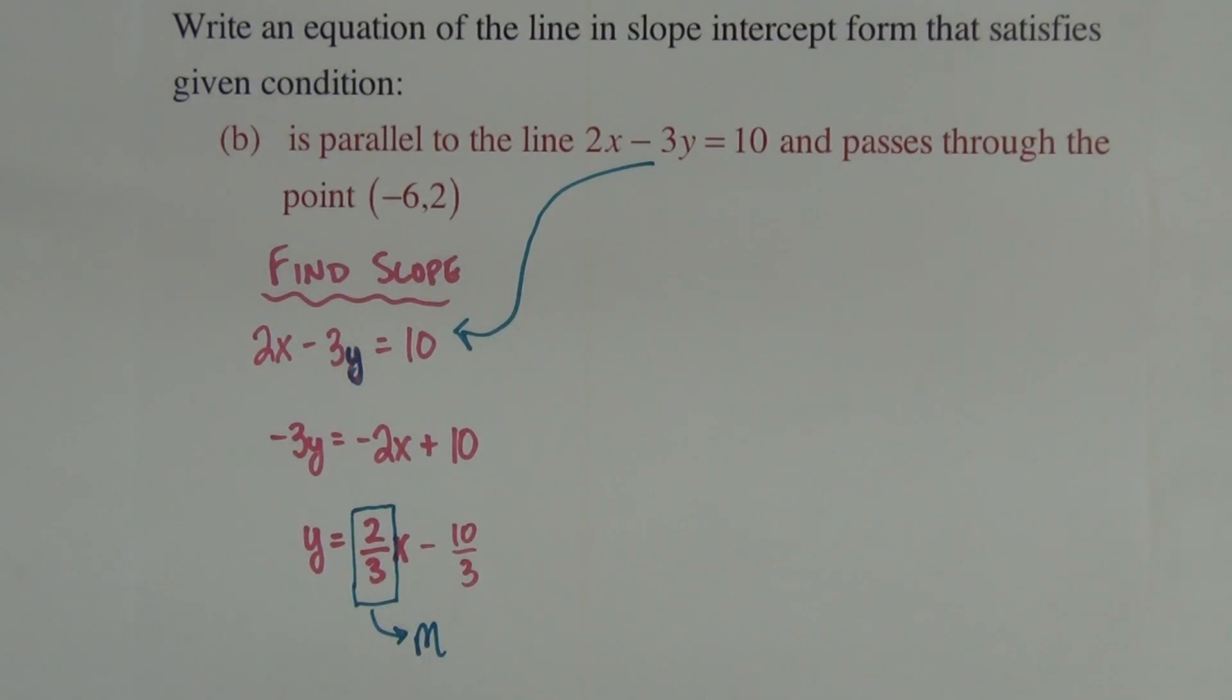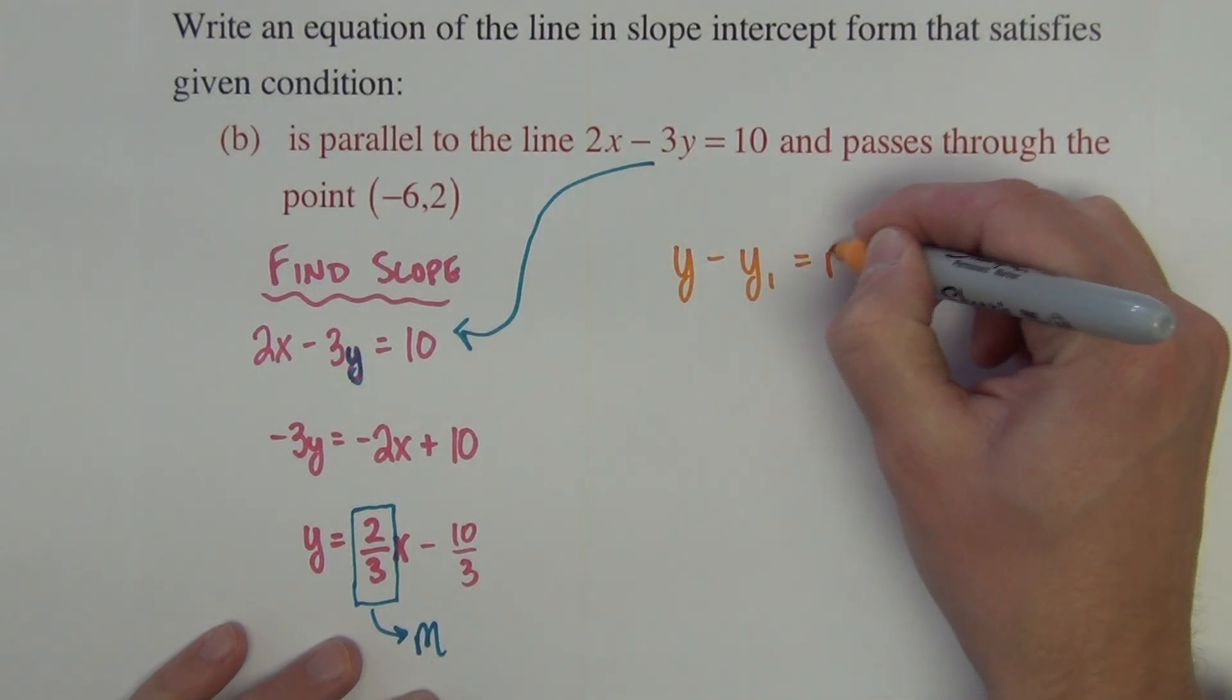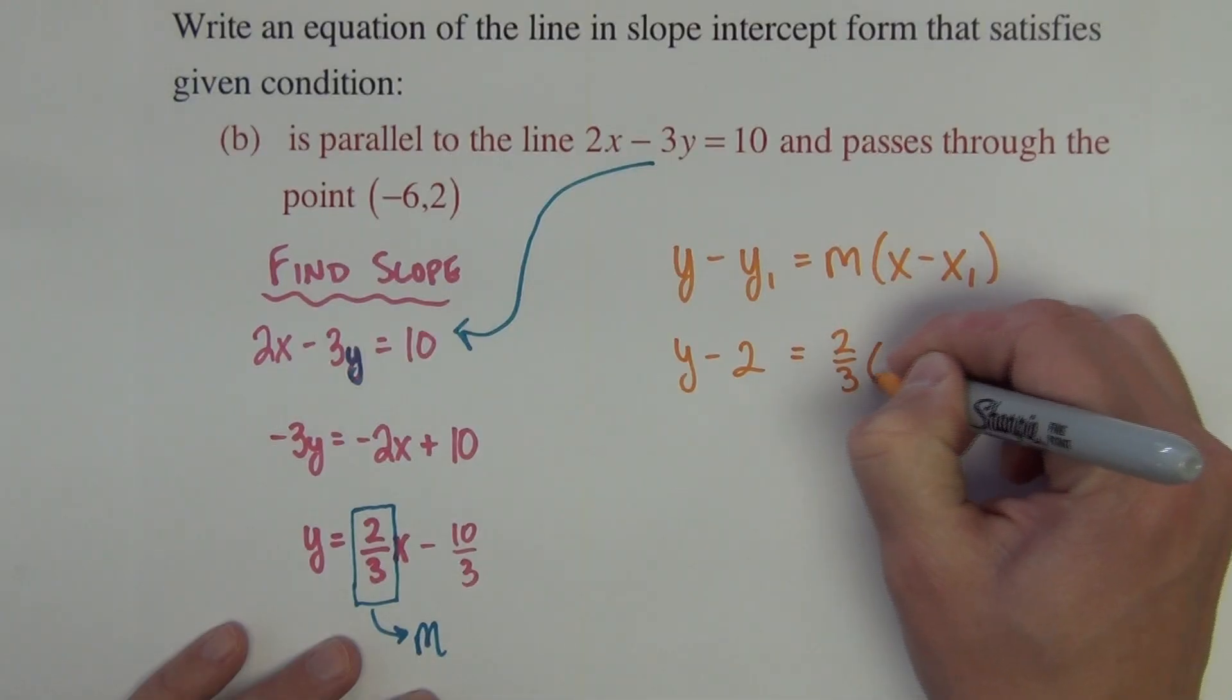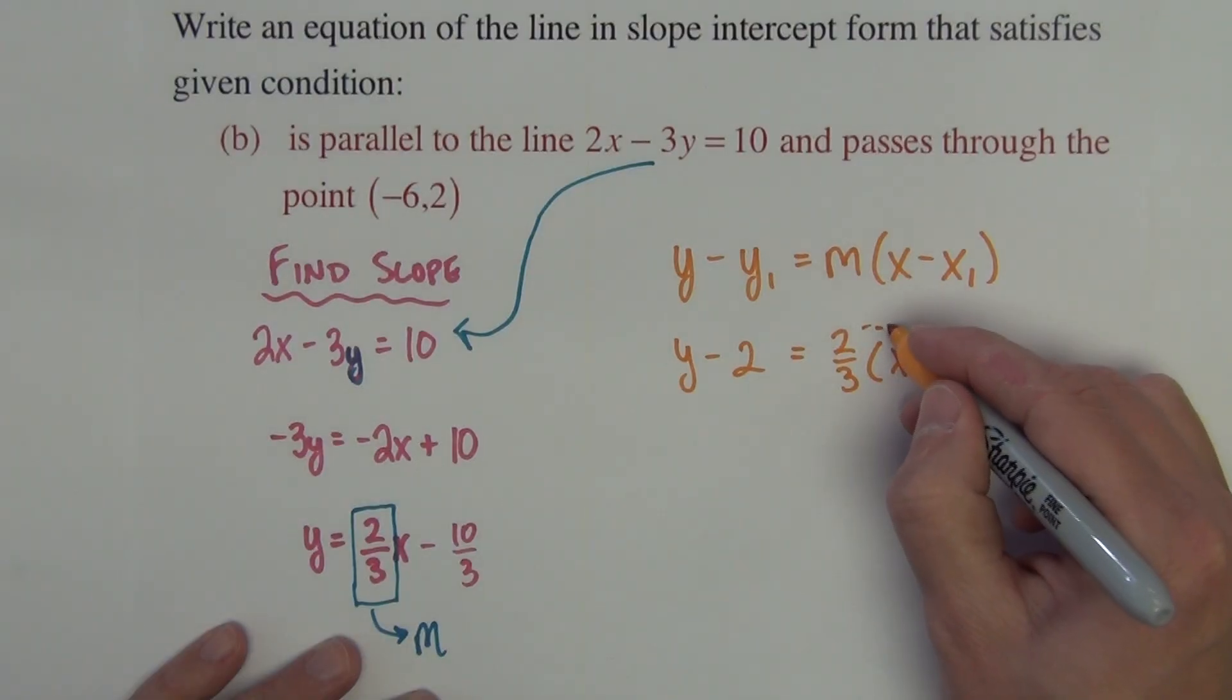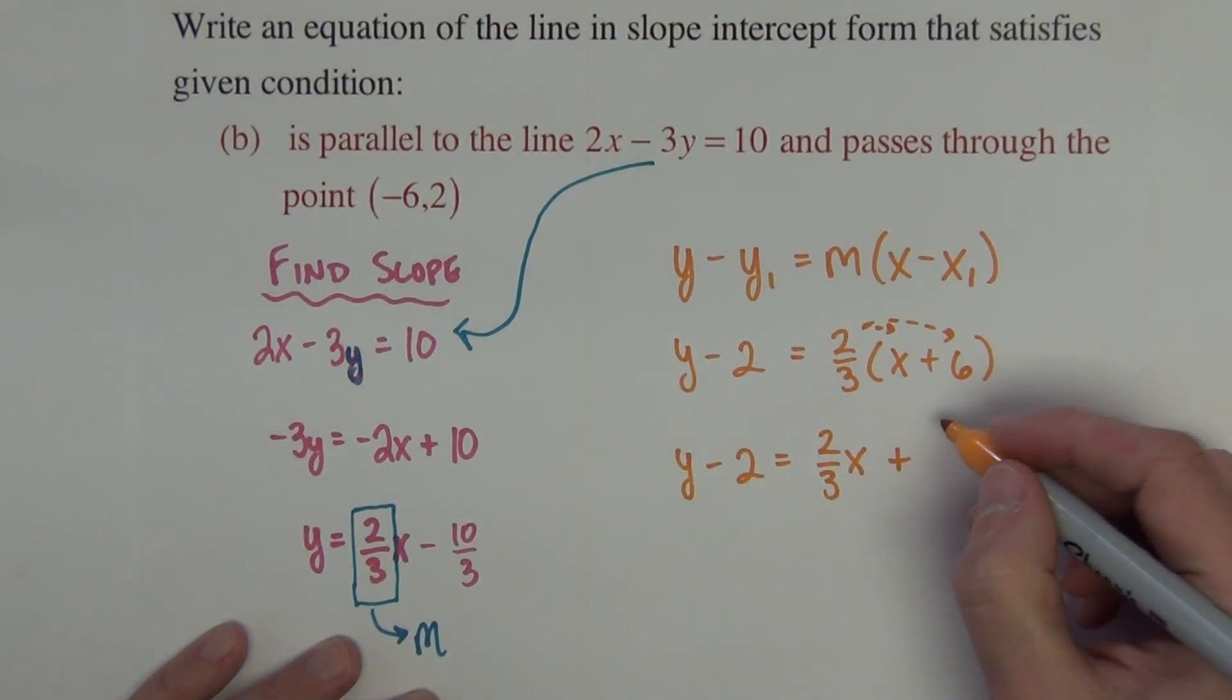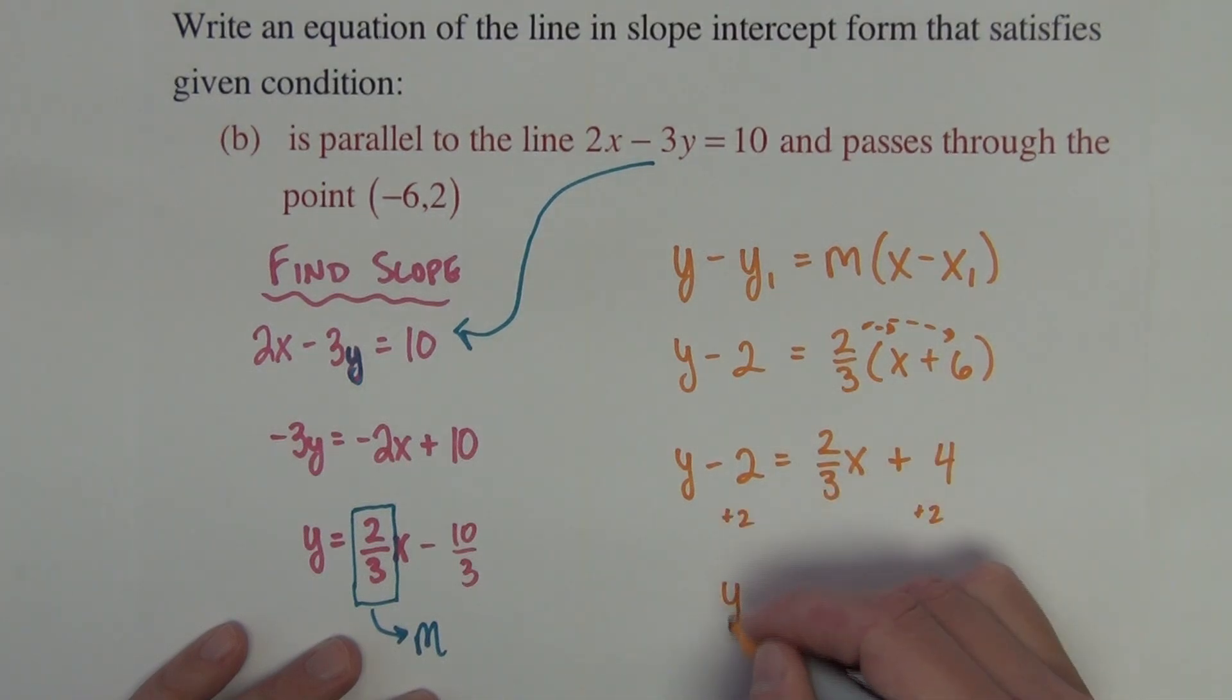Now we want to be parallel to this line, so we're going to use that exact same slope. Now we use point-slope. Here our point is right here, x1, y1. So we have y minus 2 equals 2 thirds, that's our slope, times x minus negative 6. Distribute the 2 thirds. We get y minus 2 equals 2 thirds x plus 4. We add 2 to both sides. We get y equals 2 thirds x plus 6.